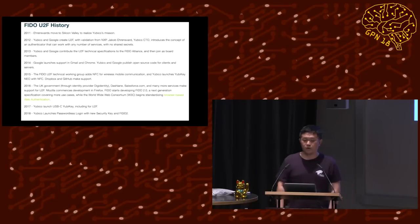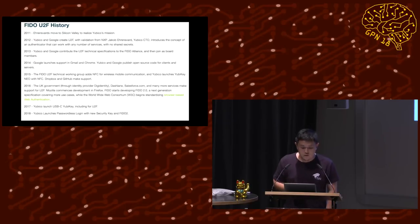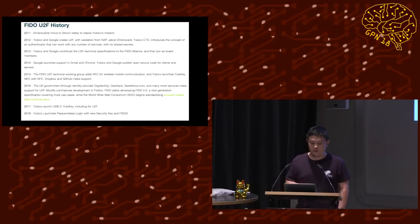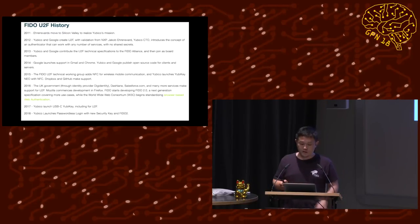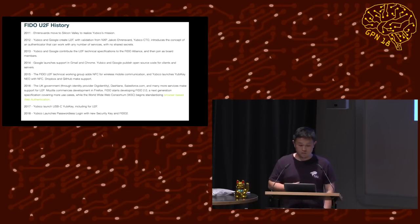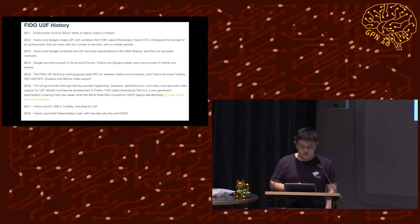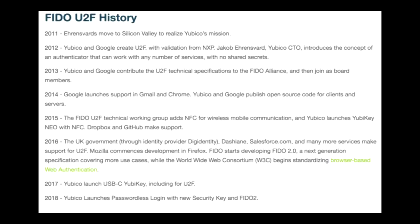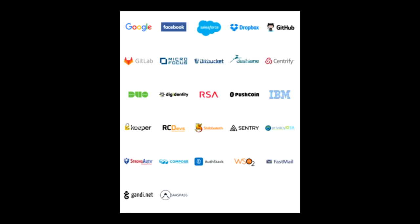Here is a brief history of U2F. In 2012, the U2F technical specification was submitted to the FIDO Alliance. In 2014, support for Gmail and Chrome started. In 2016, U2F gained government support. In early 2017, Facebook also added U2F support. Now Facebook, Dropbox, and GitHub all support U2F. Open-source projects like GitLab and WordPress also support U2F through simple plug-ins.